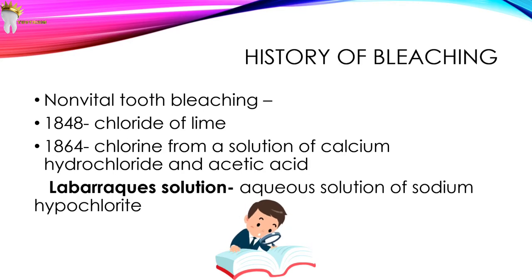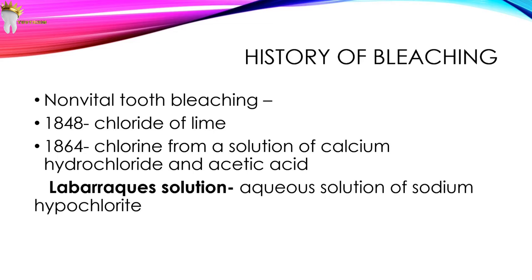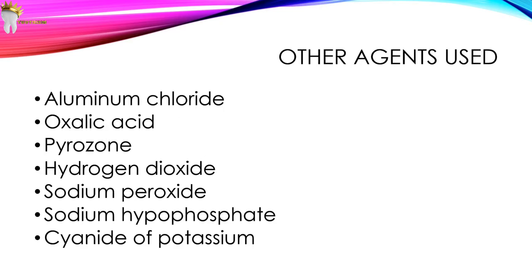Non-vital tooth bleaching began in 1848 with the use of chloride of lime. In 1864, Truman introduced a method which used chlorine from a solution of calcium hydrochloride and acetic acid. The commercial derivative of this, later known as Labarraque's solution, was an aqueous solution of sodium hypochlorite. Other agents used in the 19th century included aluminium chloride, oxalic acid, pyrozone, hydrogen dioxide, sodium peroxide, sodium hypophosphate, and cyanide of potassium.